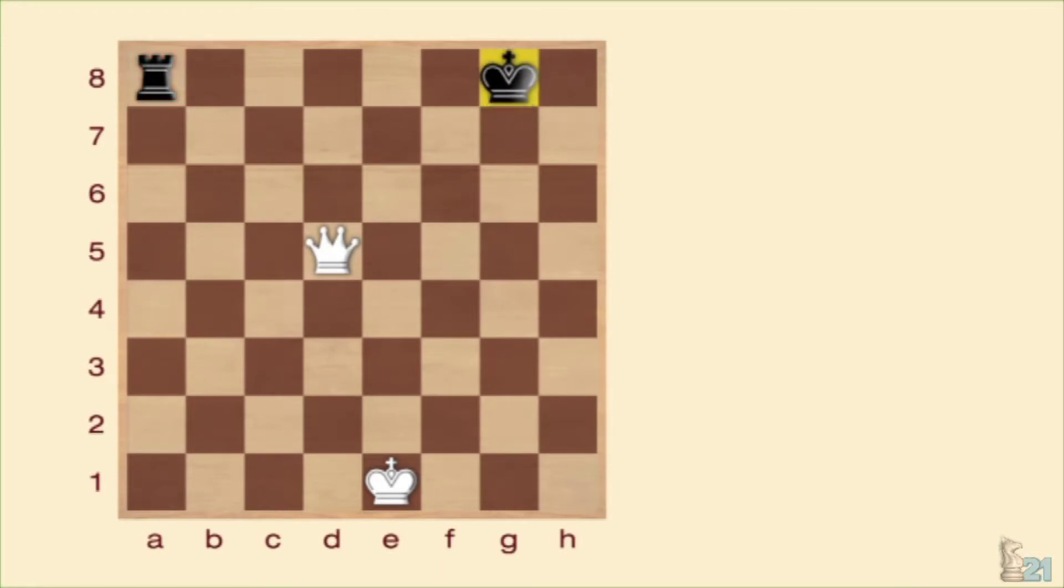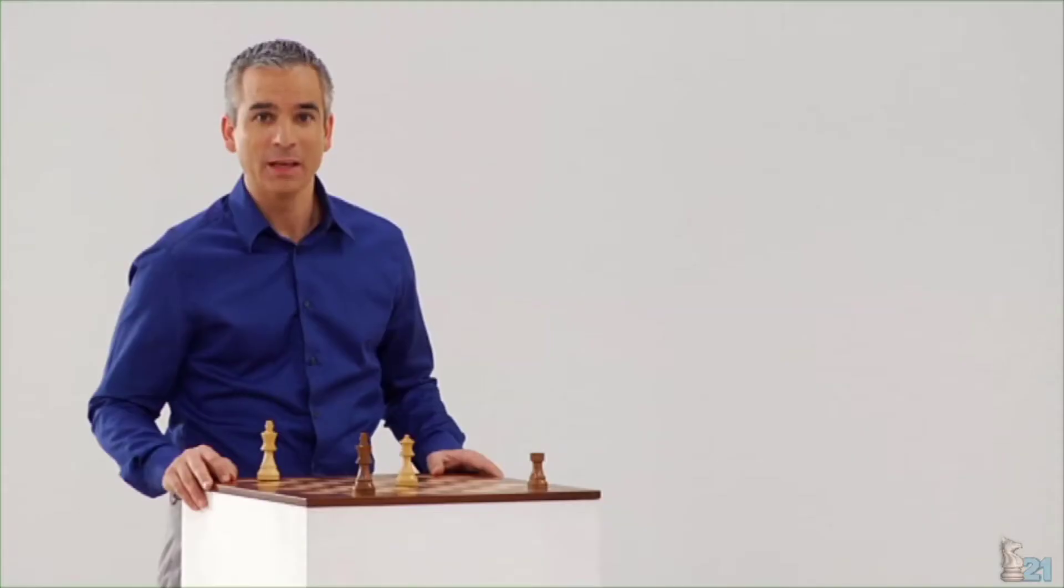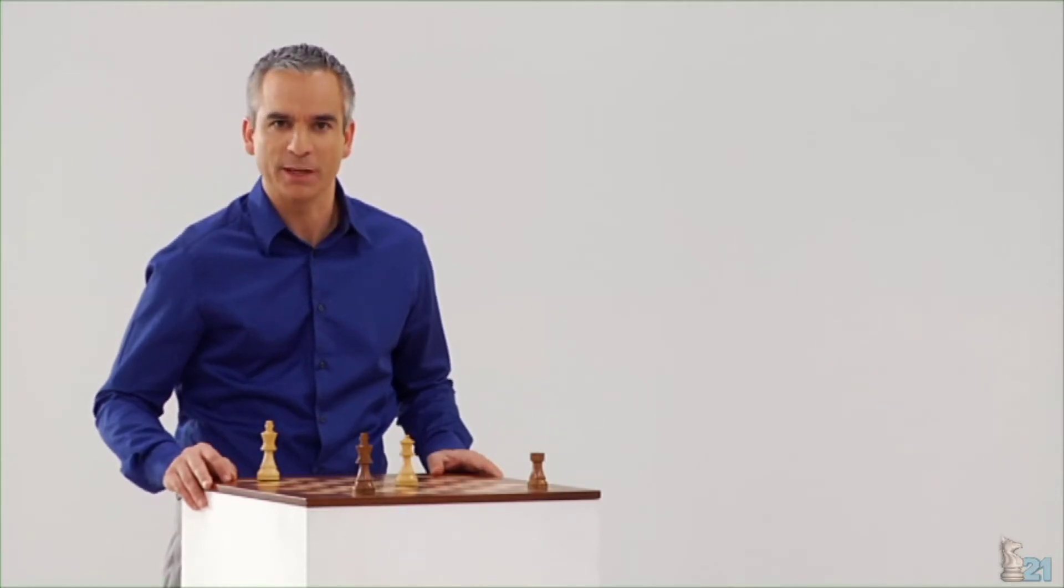Esta jugada crea serias dificultades al rival ya que el rey se ve obligado a mover, dejando vía libre a la dama para capturar la torre y lograr una importante ventaja material. Fácil, ¿no? Veamos otros ejemplos.